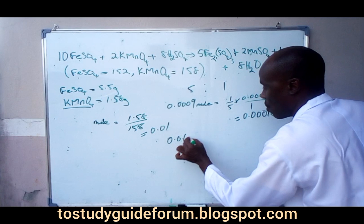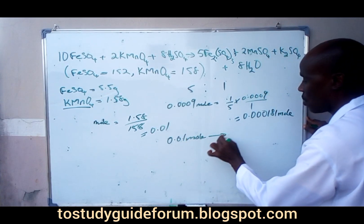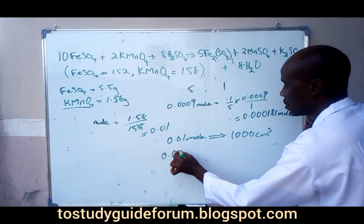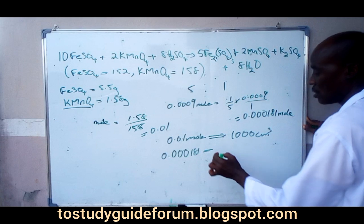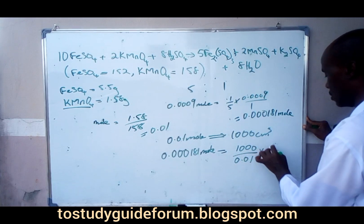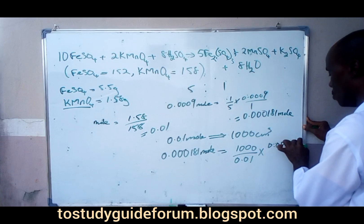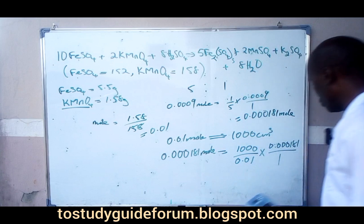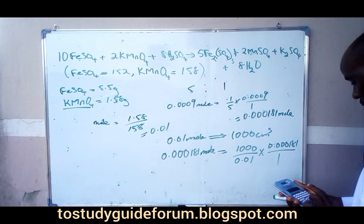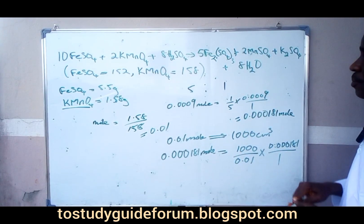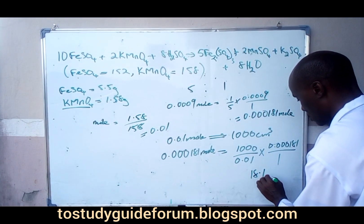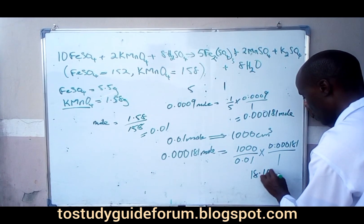0.01 moles is contained in 1000 cm³. Therefore, 0.00018 moles will be equal to 1000 divided by 0.01, times 0.00018. So our volume of the potassium permanganate solution will be equal to approximately 18.1 cm³.